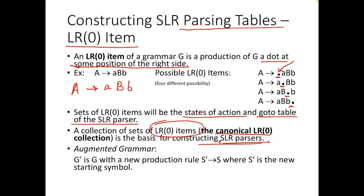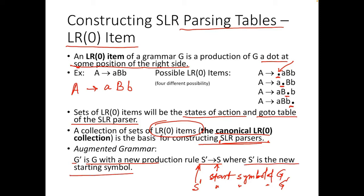Augmented grammar is another important concept. When we augment a grammar, we add an extra production rule to assure that the start symbol is always the same. We define G dash as G with a new production rule S dash to S, where S is the start symbol of G and S dash is the start symbol of G dash — the new starting symbol. Augmentation happens by adding a new rule for the start symbol.